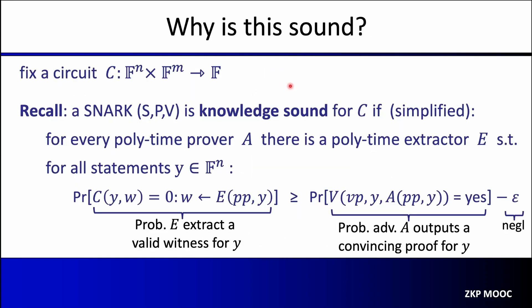You might be wondering why this is sound at all. Let's walk through a quick argument as to why this recursive construction provides knowledge soundness. We say that a SNARK SPV is knowledge sound for a circuit C if for every malicious polynomial-time prover A, there is an efficient extractor E satisfying: for all statements Y, if the malicious prover is able to produce a valid proof for Y, the extractor can extract a witness with probability greater than that minus some negligible epsilon — the knowledge error.